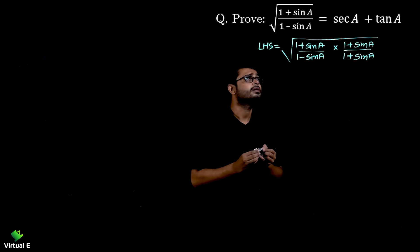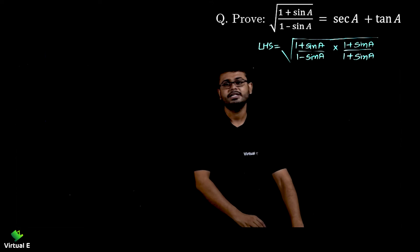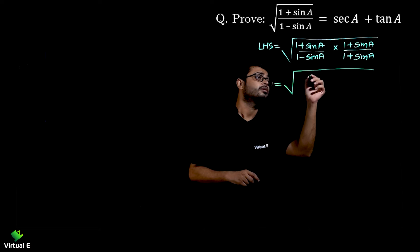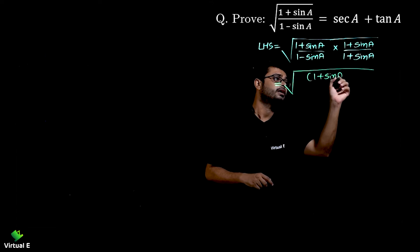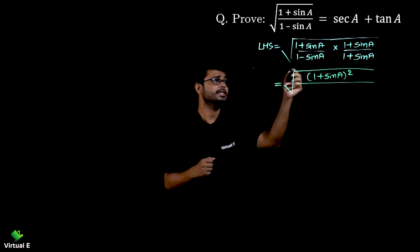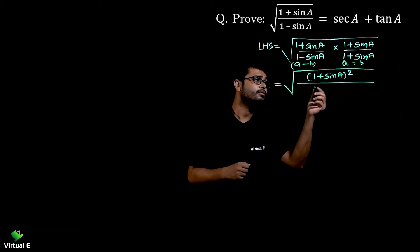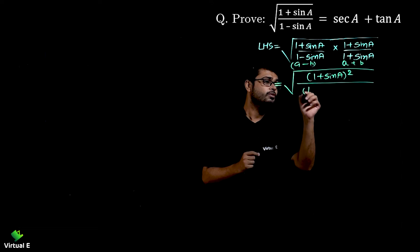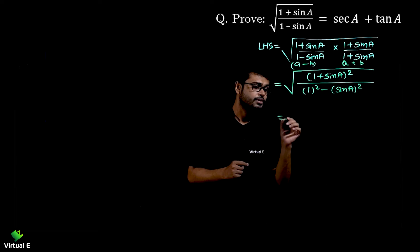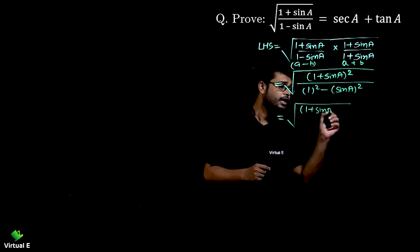In the numerator, (1 + sinA) multiplied by (1 + sinA) will be (1 + sinA) whole square. In the denominator, (1 - sinA)(1 + sinA) is in the form of (a - b)(a + b), so I'm going to write a² - b², that is 1² - (sinA)² = 1 - sin²A.